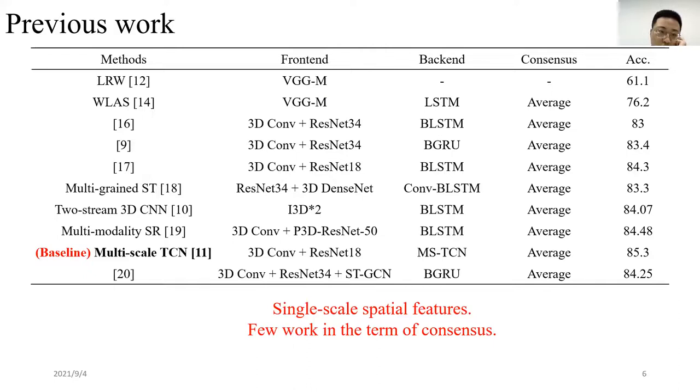We observed that all models have kernels with a single spatial size in the front-end and average along the temporal dimensions in consensus decisions. The state-of-the-art performance on LRW was achieved by a model consisting of a 3D convolutional layer followed by an 18-layer residual network, or ResNet-18, as a front-end and a multi-scale temporal convolutional network, MS-TCN back-end. The final score vector at the expression level for the 500 words to be predicted was obtained by averaging the output of the back-end along the time dimension. It serves as our baseline for performance comparison.